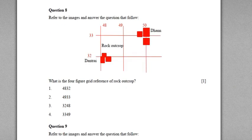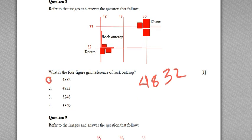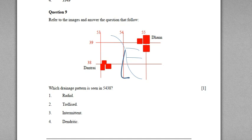Question eight: refer to the image with two villages and a rock outcrop given in one grid square. What is the four-figure grid reference of the rock outcrop? As explained earlier, take the easting on the left side of the feature and the northing at the bottom — drawing the letter L helps. Write eastings first, then northings. The easting is 48 and the northing is 32, giving the grid reference 4832. Option number one is the correct answer.